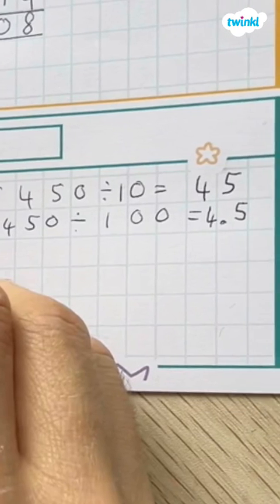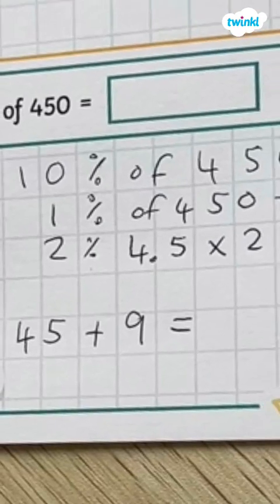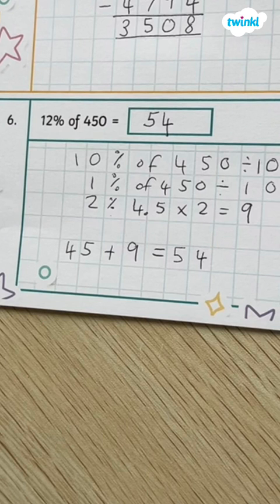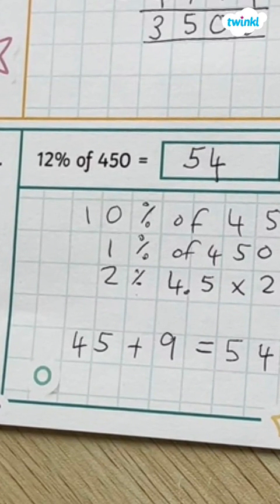So 450 divided by 100 equals 4.5, and then for 2% you just double that which equals 9. 45 plus 9 equals 54, so 12% of 450 is 54.